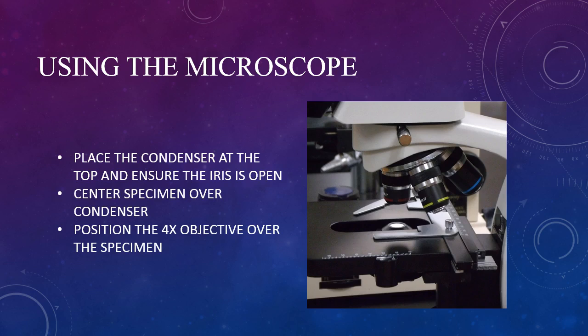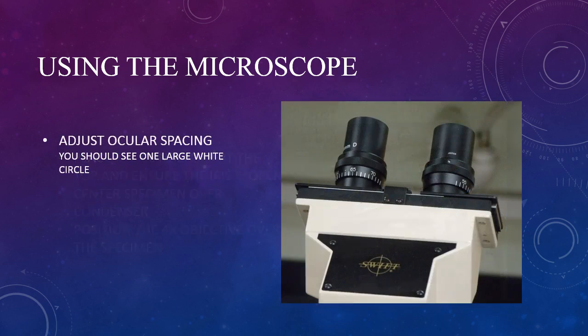You should see your specimen in the center of the small ring of light. Then be sure the 4x objective lens is in position. So far, our setup has been done without even looking through the ocular lenses. Now it's time to get the microscope adjusted to fit your own eyes.